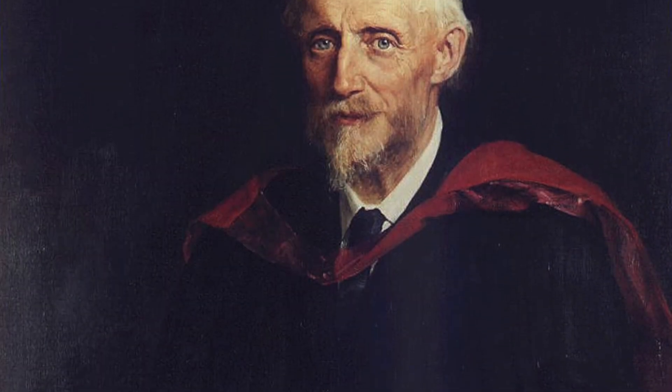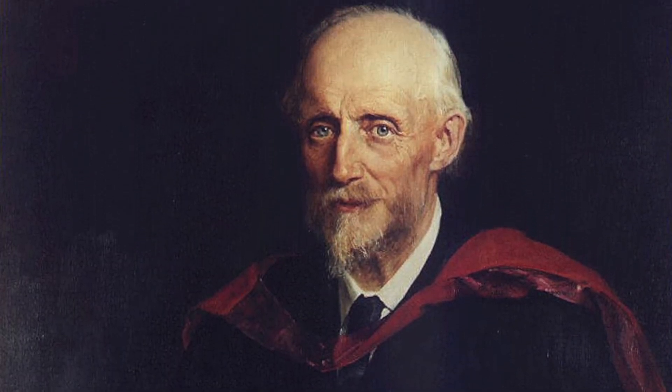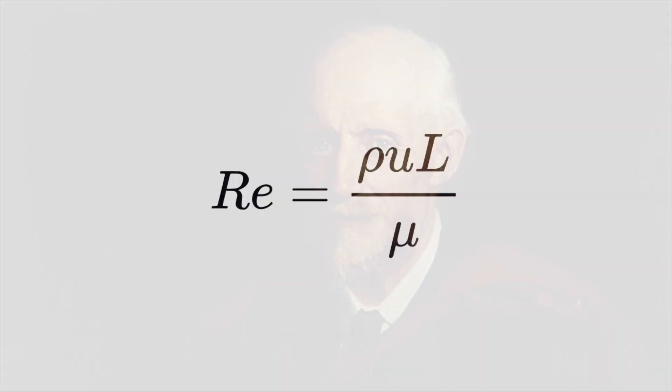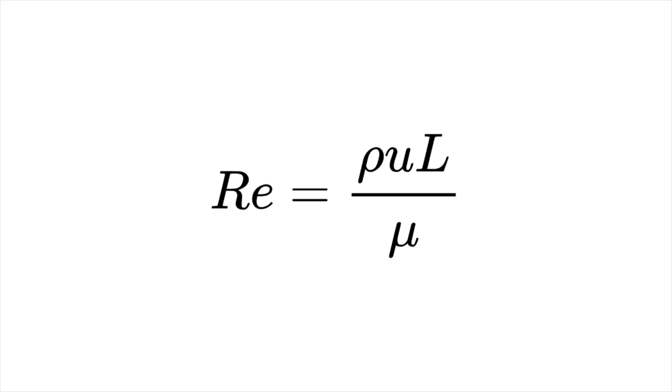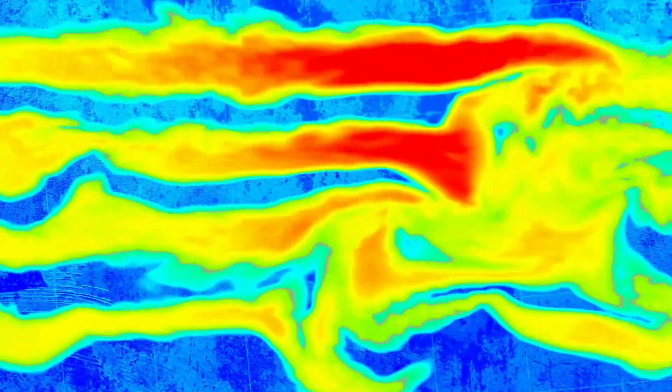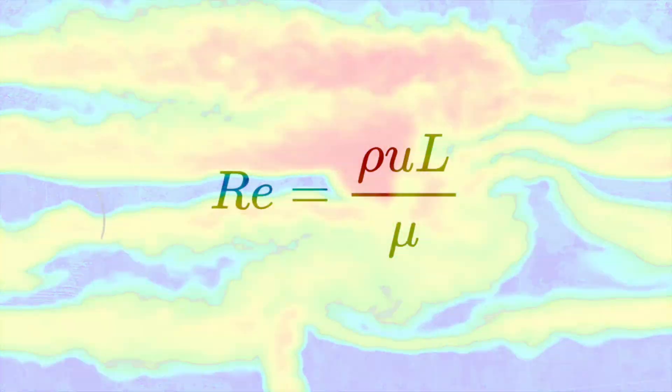So we've seen what laminar versus turbulent flow might look like, but how do we analyze these different regimes? Well, it's thanks to a man called Osborne Reynolds who in 1883 defined a quantity known as the Reynolds number. This beautiful number is used to predict whether a flow will be laminar or turbulent.